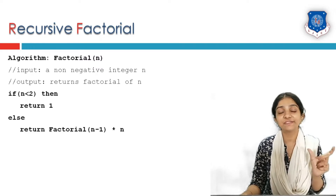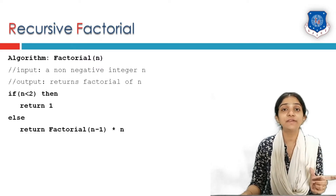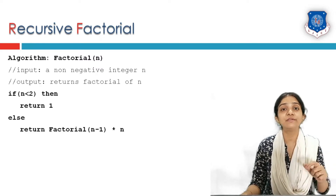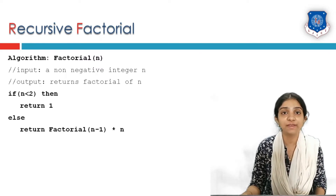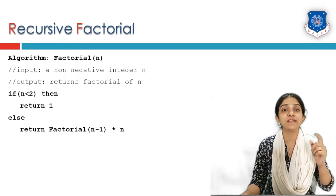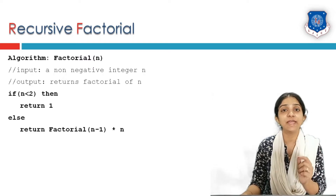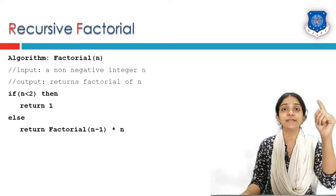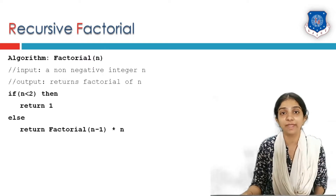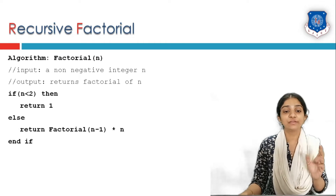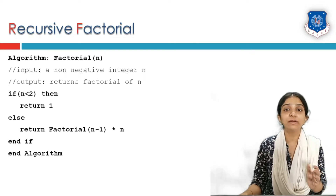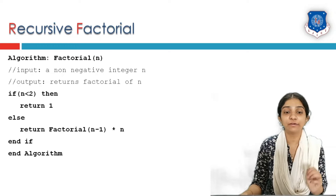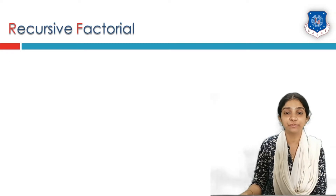In this case, factorial of n minus 1 is a recursive statement which calls the algorithm itself with the parameter n minus 1 instead of n. This is the algorithm of factorial in a recursive fashion.